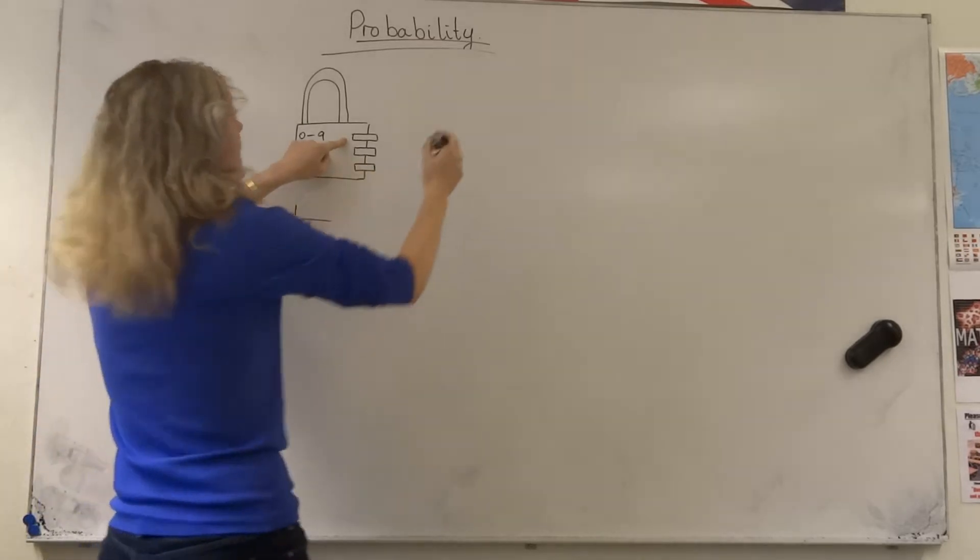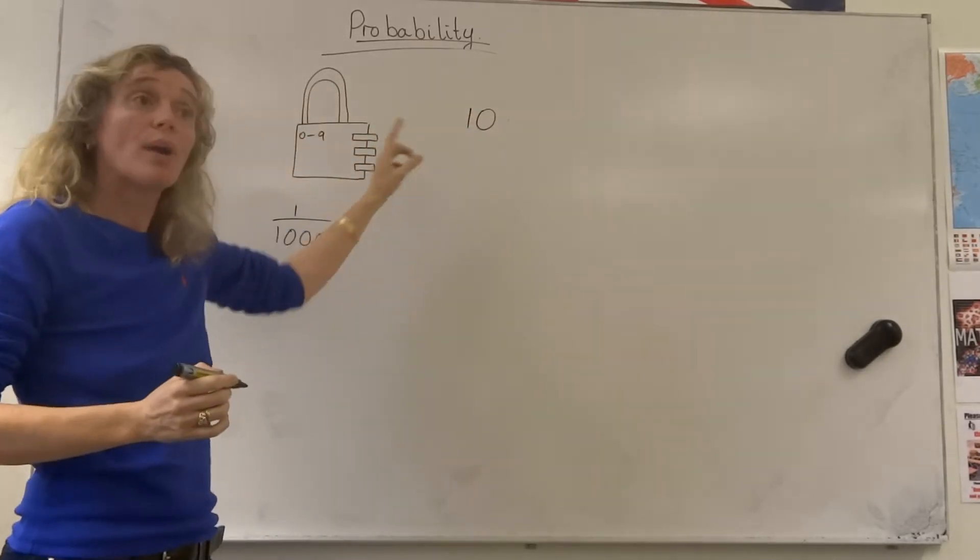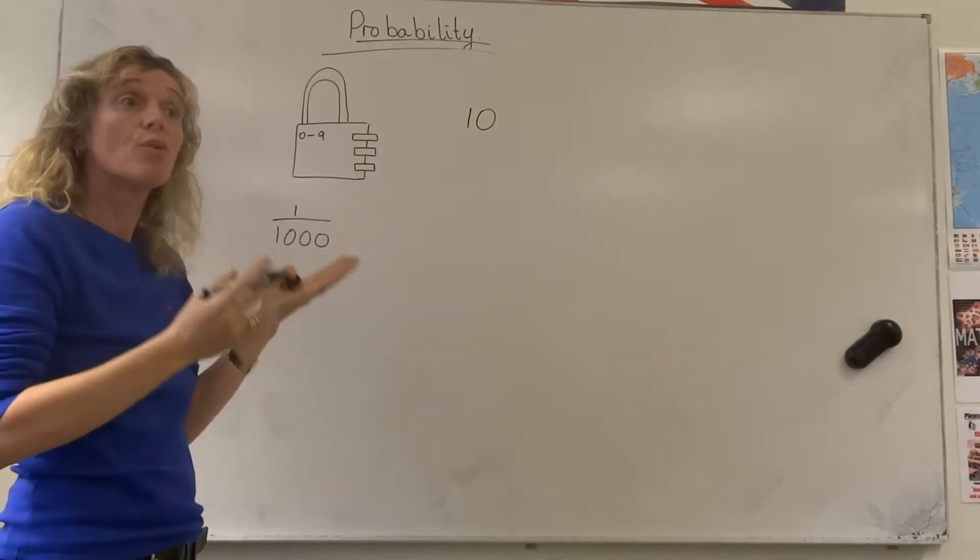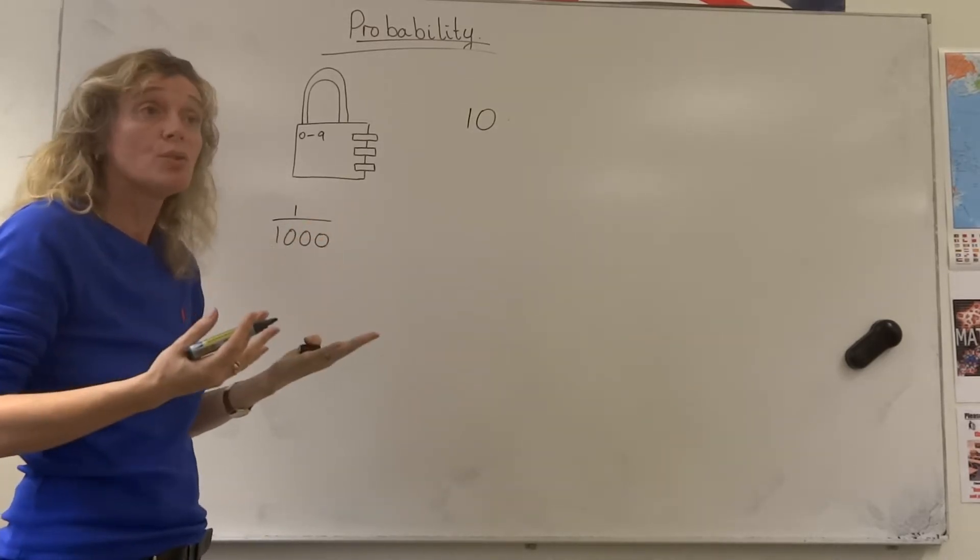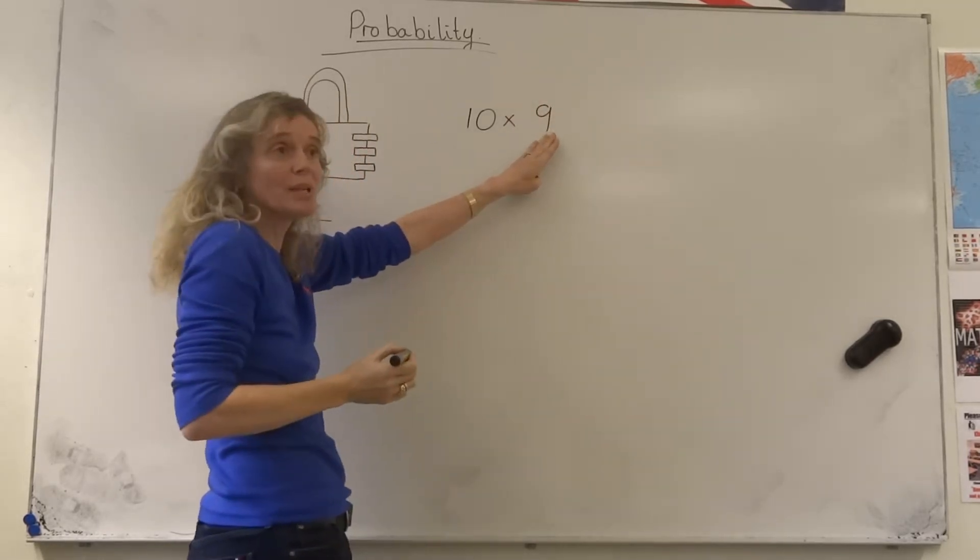First time around, I would have 10 numbers to choose between. But second time around, I don't have 10 possibilities anymore because I've already chosen one, and I'm not allowed to use the same number twice. So second time around, I've only got 9 possibilities.